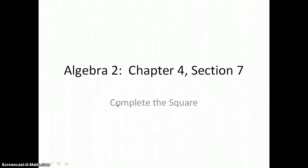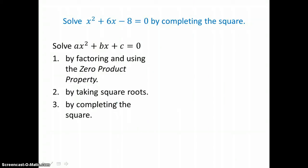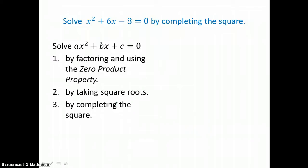In lesson 4.7, you will solve quadratic equations by completing the square. In this example, we're going to solve x squared plus 6x minus 8 equals 0 by completing the square. We've already solved quadratic equations by factoring and using the zero product property, and also by taking square roots. In this lesson, we're going to learn yet another method for solving a quadratic equation: completing the square.